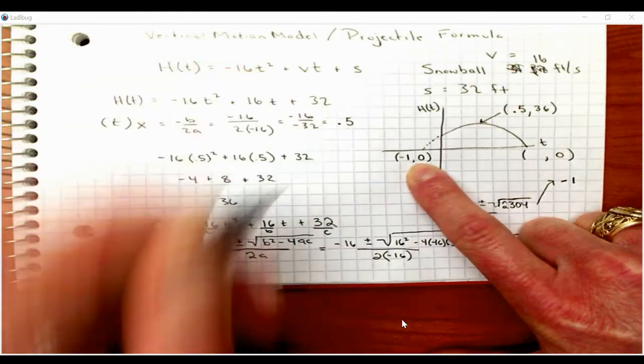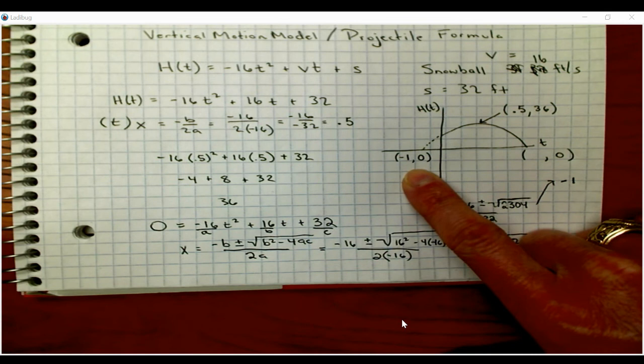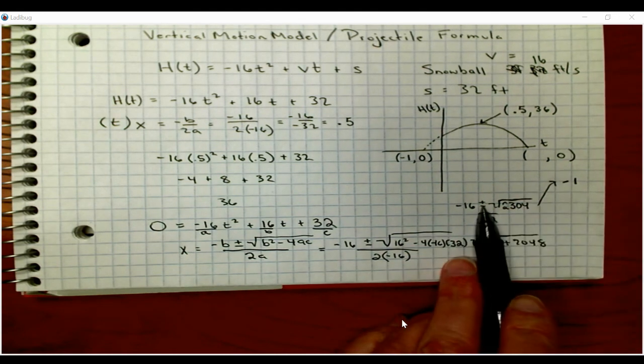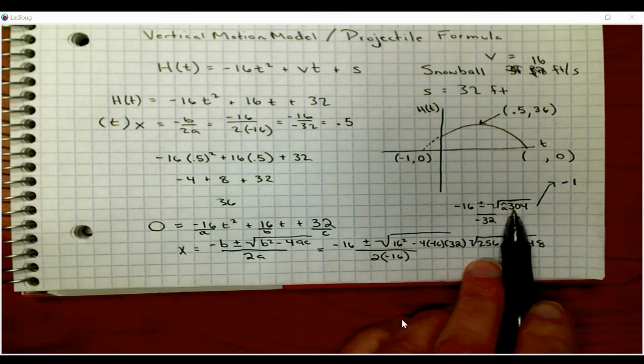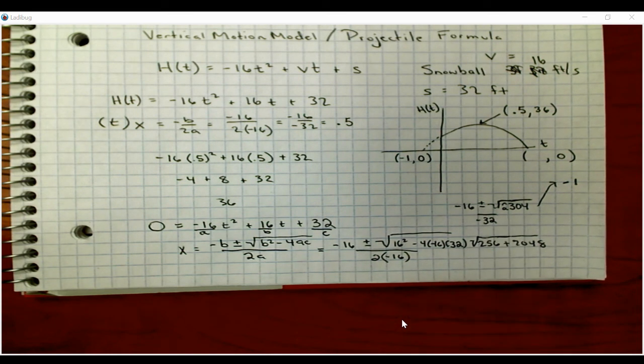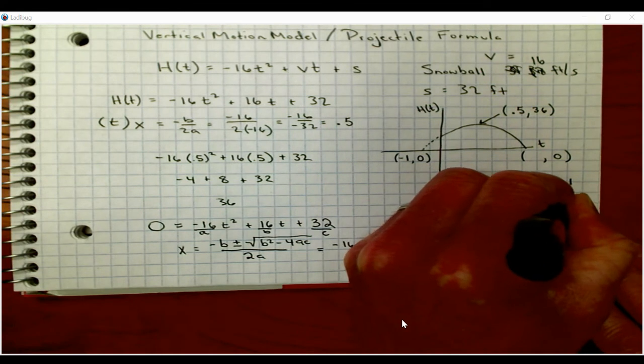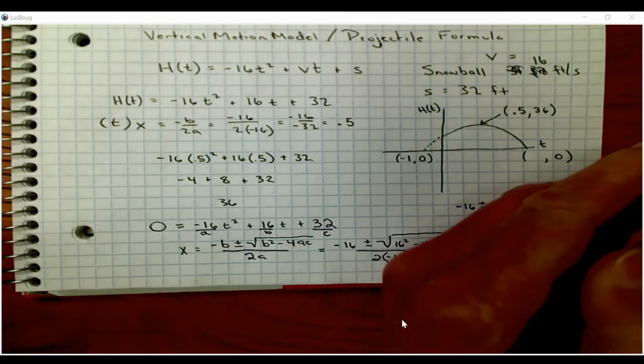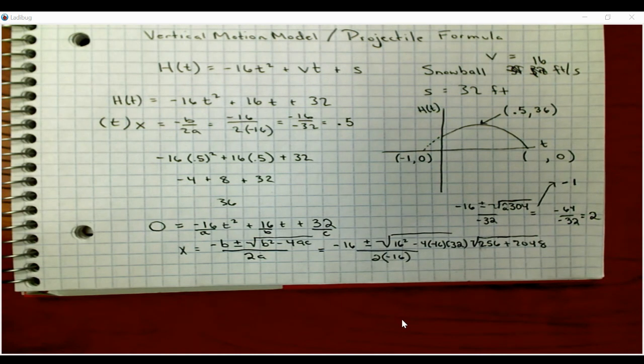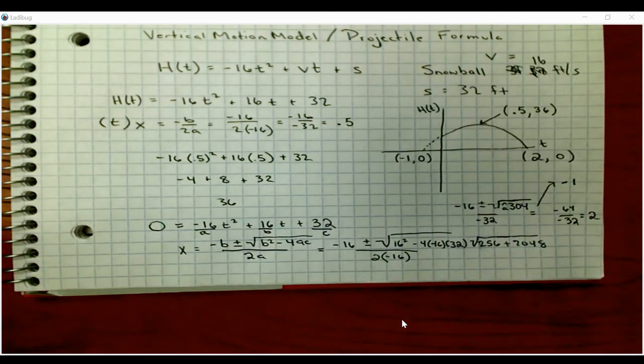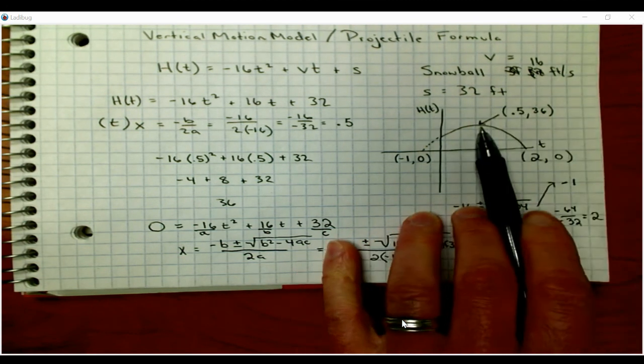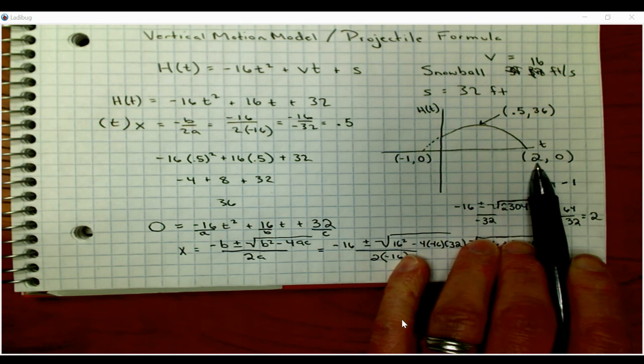So that tells us that this is at (-1, 0). Remember, this is the solution that doesn't make sense, right? It can't have -1 seconds. That's not what we were doing. Now the other one, so I did the plus first. Now I'm going to come back and I'm going to do -16 minus the square root of this. So -16 minus the square root of 2,304. This is -64. So -64 is the numerator divided by -32. Well, two negatives make a positive, and that's twice. So two seconds. So the answer to our question, after a person throws a snowball at this initial velocity, at this height, we know that it gets up to 36 feet, and then it will be sitting on the ground at 2 seconds.